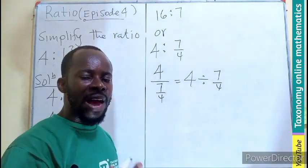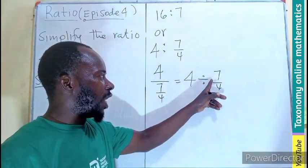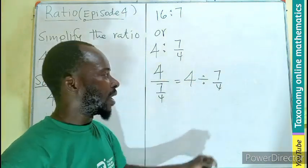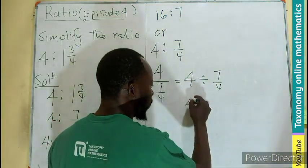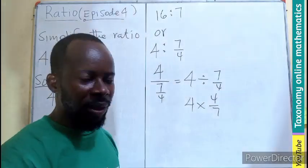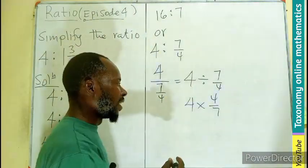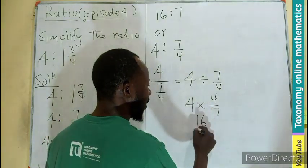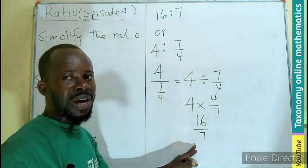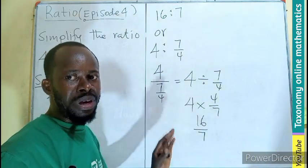This division can be taken as 4 divided by 7 on 4. In terms of dividing fractions, we change this into multiplication and reciprocate the second fraction, meaning 4 times 4 on top of 7. This is multiplication, so numerators multiply to give us 16 divided by 7.